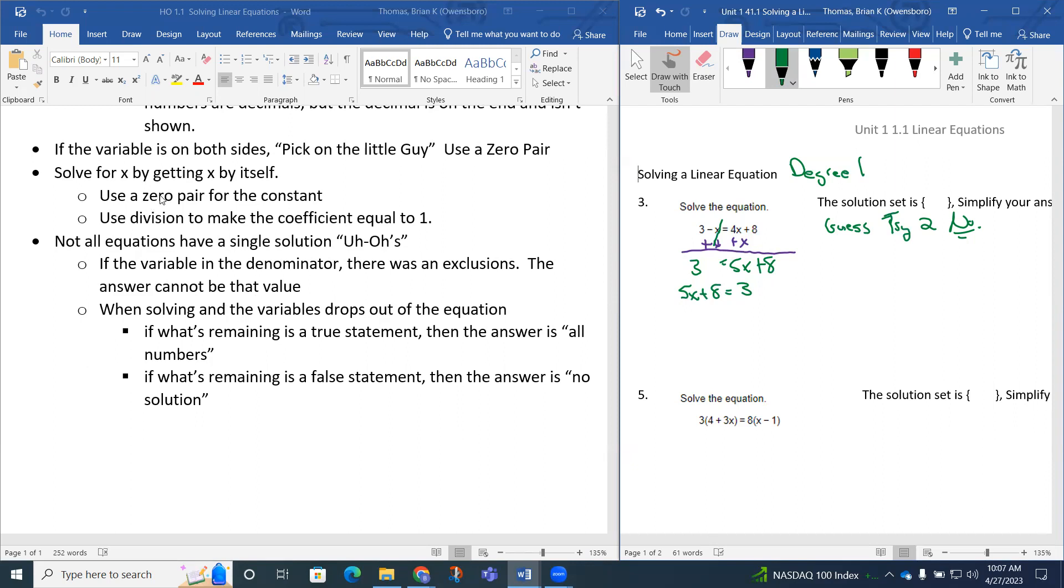To get x by itself, we want to use the zero pair for the constant. The 8 is called the constant, so I want to zero it out by using its opposite. The opposite of 8 is negative 8. I'm going to put a negative 8 here, as long as I put a negative 8 on the other side of the equation. The 8 and the negative 8 zero out, leaving me 5x. Then we have 3 minus 8, which is negative 5.